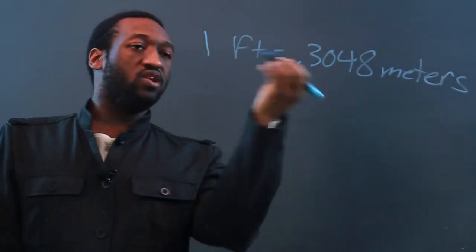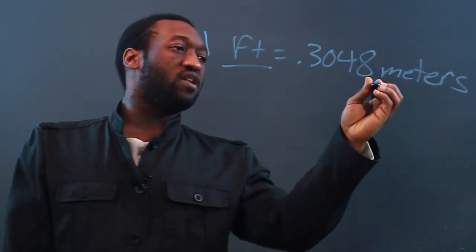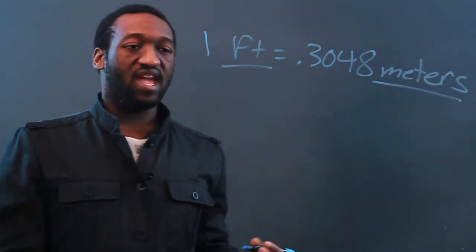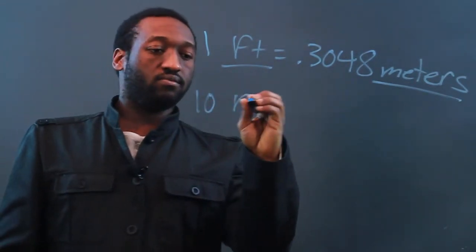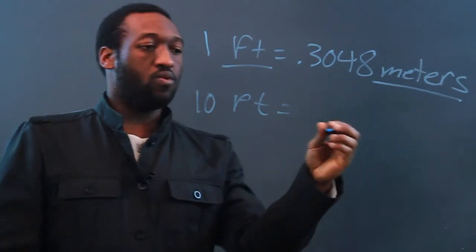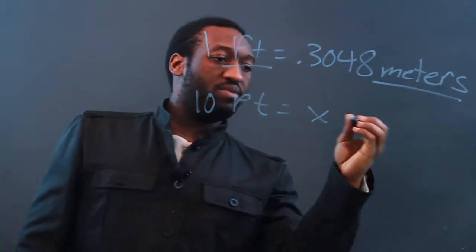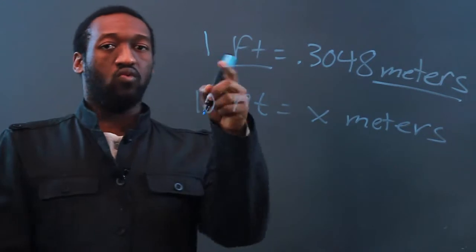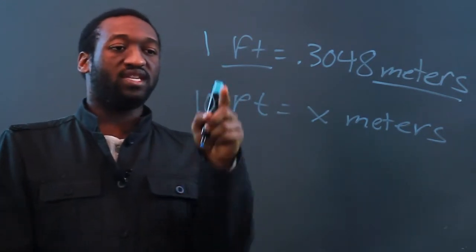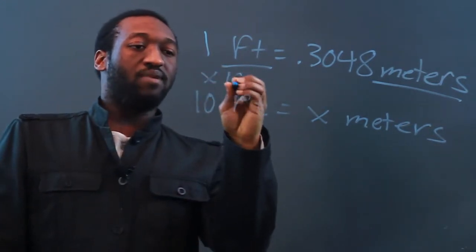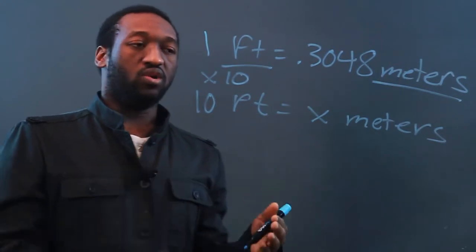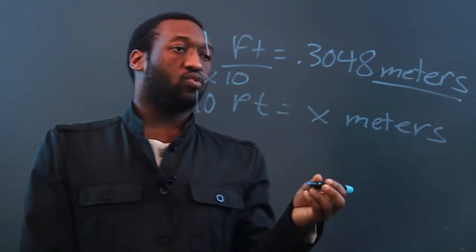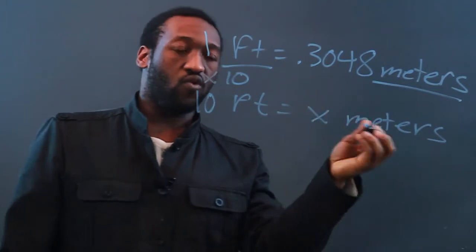In the U.S. we have the foot for length, and in the metric system we have meters for length. So let's say we had ten feet and we wanted to know how many meters this was. Well, we notice that to go from one to ten, we have to multiply by ten. So we're going to do the same thing on the other side of the equation — we'll multiply 0.3048 by ten.